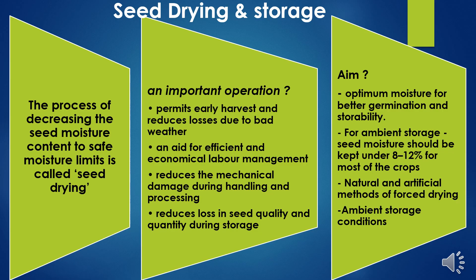Seed drying refers to the process of decreasing seed moisture content to safe moisture limits. Seed drying is very important to permit early harvest and reduce losses due to bad weather. There should be proper management of seed drying — a threshing floor or yard should be available to spread the harvested produce and dry efficiently, following all control measures. Seed drying also aids efficient and economical labor management.